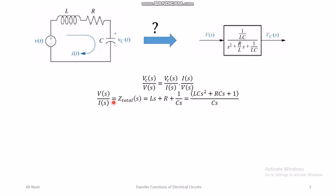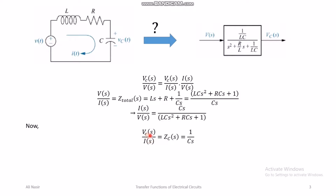I have simply applied Ohm's law — V over I equals total impedance. Then I over V is just the reciprocal of that. Next, V_C over I: since V_C is the voltage drop across the capacitor only, by Ohm's law V_C over I equals the impedance of the capacitor alone, which is 1/(Cs).